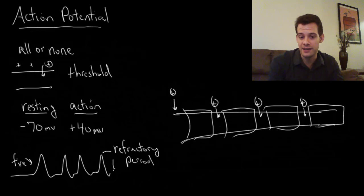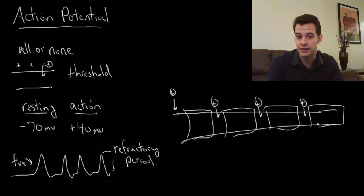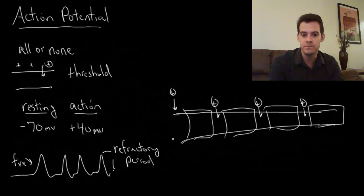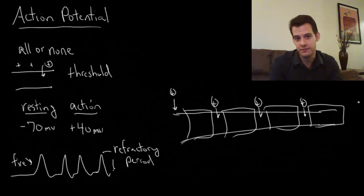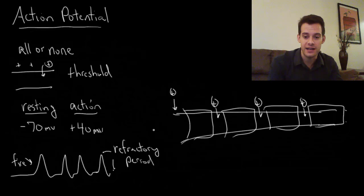Just like in the baseball stadium: if only the first person in each section of seats stood up and sat down, the message would get around the stadium more quickly and more efficiently — we wouldn't need to move all the people in between to get the same message to the end. That's how myelin makes neurons communicate more efficiently and send an action potential down the axon more quickly.